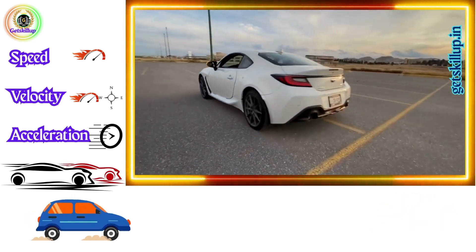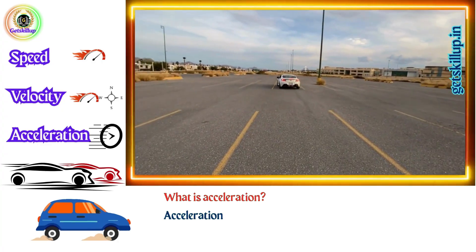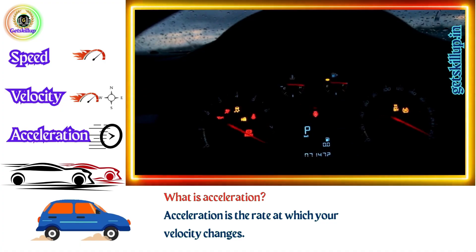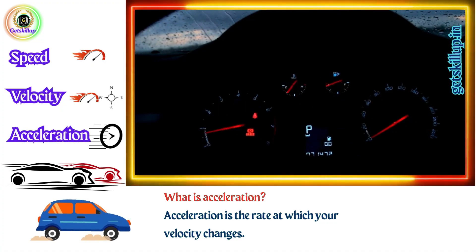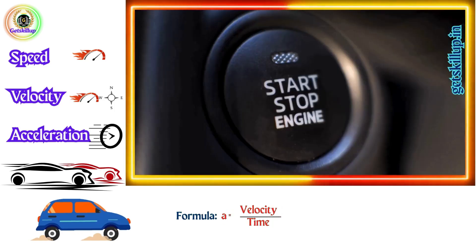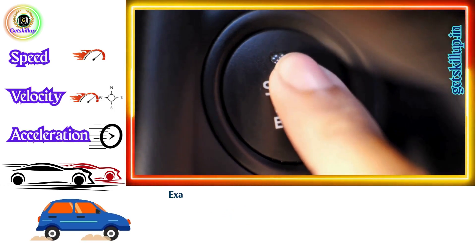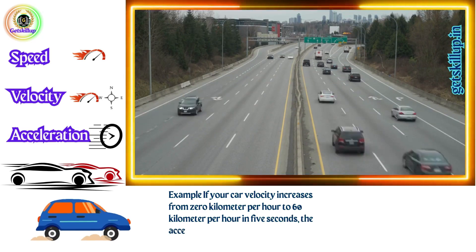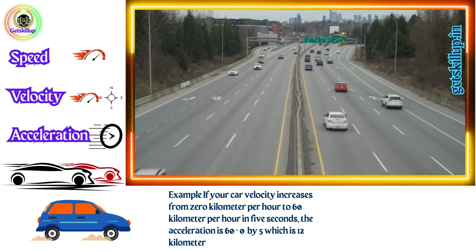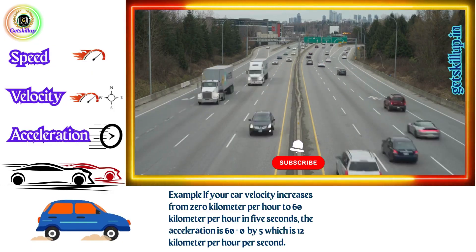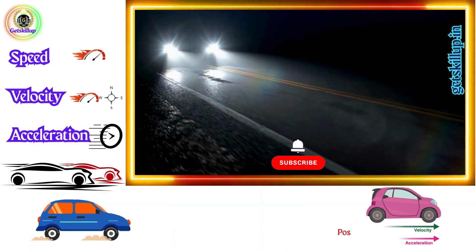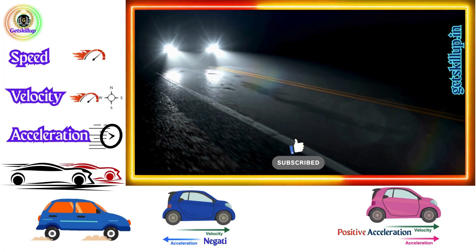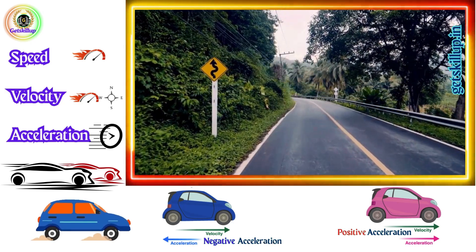What is acceleration? Now, what if your speed keeps changing? That's where acceleration comes in. Acceleration is the rate at which your velocity changes. Formula: acceleration equals change in velocity by time taken. Example: if your car's velocity increases from 0 km/h to 60 km/h in 5 seconds, the acceleration is 60 minus 0 by 5, which is 12 km per hour per second. Simply put, speeding up equals positive acceleration; slowing down equals negative acceleration, also called deceleration.